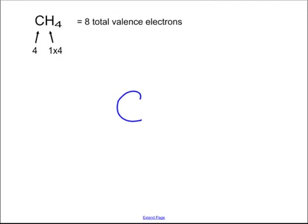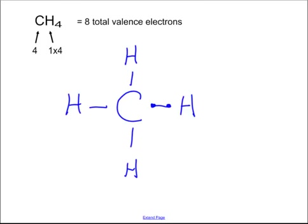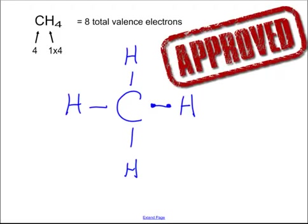Carbon is the lone atom and goes in the center. Hydrogen goes on the outside. This is actually hydrogen's octet — you don't need all those dots around hydrogen because hydrogen's octet is just two shared electrons. Count up how many carbon has around him: two, four, six, eight. He's got eight electrons, which is an octet. You're done — that's the Lewis dot structure of methane.